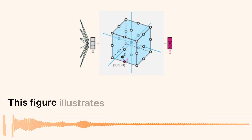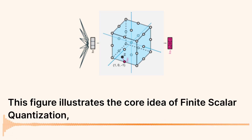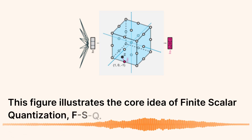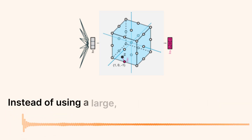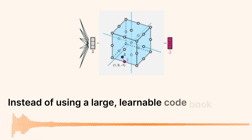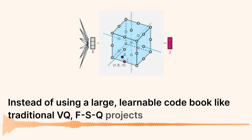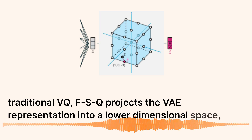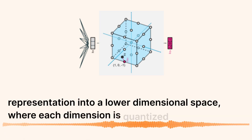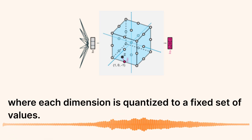This figure illustrates the core idea of Finite Scalar Quantization (FSQ). Instead of using a large, learnable codebook like traditional VQ, FSQ projects the VAE representation into a lower-dimensional space, where each dimension is quantized to a fixed set of values.